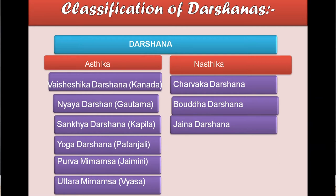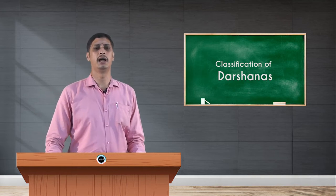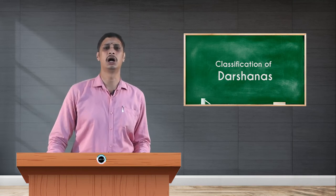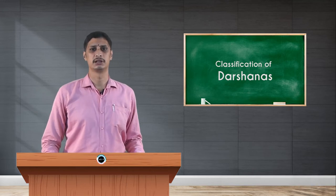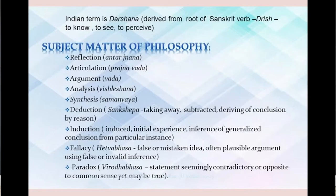Vaisheshika Darshana is authored by Sage Kanada, also named as Avlukya. Nyaya Darshana is founded by Sage Gautama. Sankhya Darshana is authored by Kapila, and the founder of Yoga philosophy is Sage Maharshi Patanjali. Purva Mimamsa is authored by Sage Jaimini, Uttara Mimamsa by Maharshi Vedavyasa. In Nastika philosophy, Charvaka is by Brihaspati, Buddha Darshana is founded by Gautama Buddha, and Jaina Darshana is authored by different Tirthankaras of Jaina philosophy.